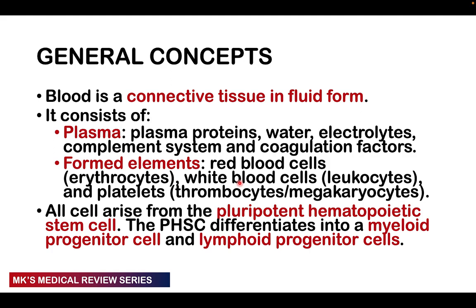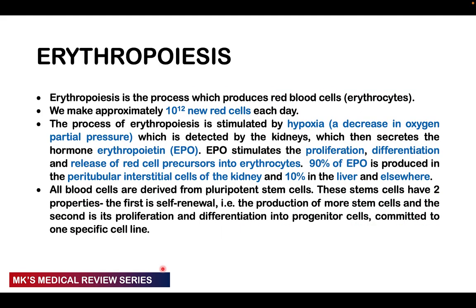A stem cell is a cell capable of giving rise to many different cell lineages while maintaining its own population. This pluripotent hematopoietic stem cell can divide into myeloid progenitor cells and lymphoid progenitor cells. The lymphoid progenitor cells give rise to lymphocytes — predominantly B cells, T cells, and natural killer cells. All other cell lineages — mast cells, basophils, eosinophils, neutrophils, monocytes, red blood cells, and platelets — come from the myeloid progenitor cell.